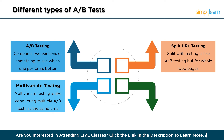Next is multivariate testing. Multivariate testing is like conducting multiple A-B tests at the same time on the same page. Instead of testing just one feature, you test several changes together to see how they perform. For example, on a website page you might test different headlines, images, and button colors all at once. This helps you understand how different elements interact with each other and which combination works best.